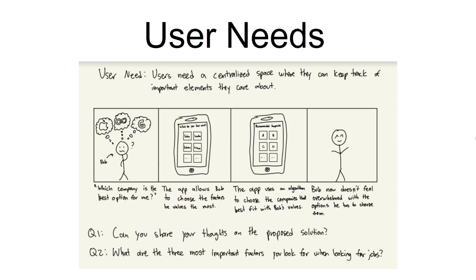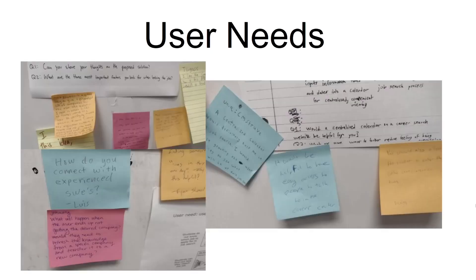Before starting on anything, we had to look for a user need in order to make a product that would be useful for the users. After analyzing several student interviews, we came to a conclusion that students were in need of a centralized space where they could keep track of important elements they cared about. In order to validate this user need, we created storyboards like this one on the screen to gather feedback from potential users. During the storyboard bake-off, we were lucky to receive lots of useful feedback notes from the participants. We were able to validate our user need by looking at the responses and came up with a potential solution.